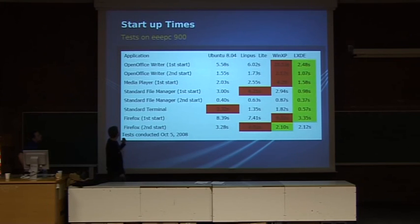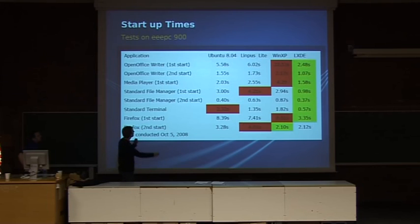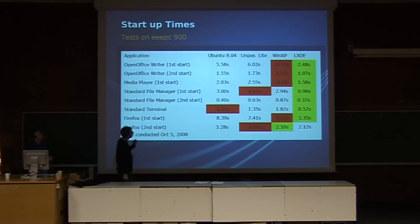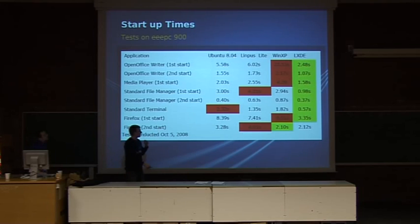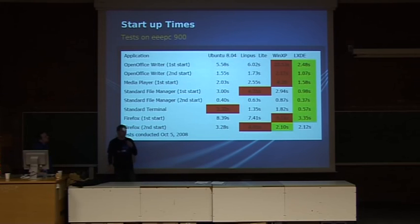We have here a table — OpenOffice Writer for instance. We have the standard GNOME, Ubuntu 8.04, we have Linpus Lite which is based on old Fedora, and we have Windows XP. Windows XP is the leader in slowness. And LXDE, overall, is a much less resource hungry system.